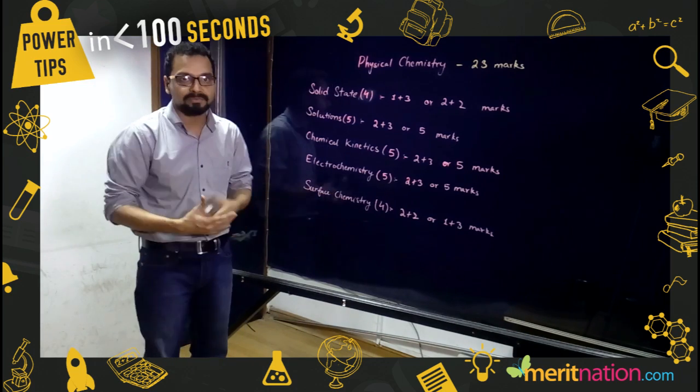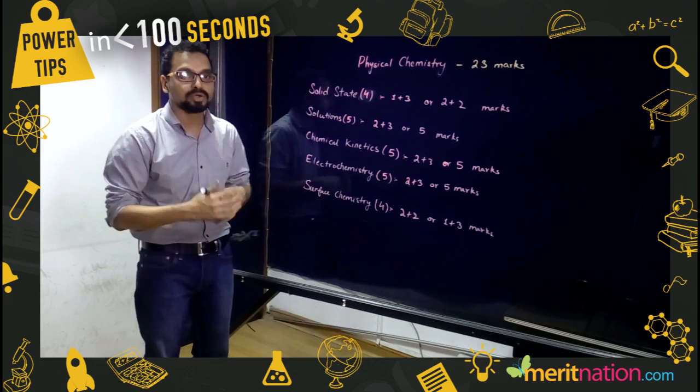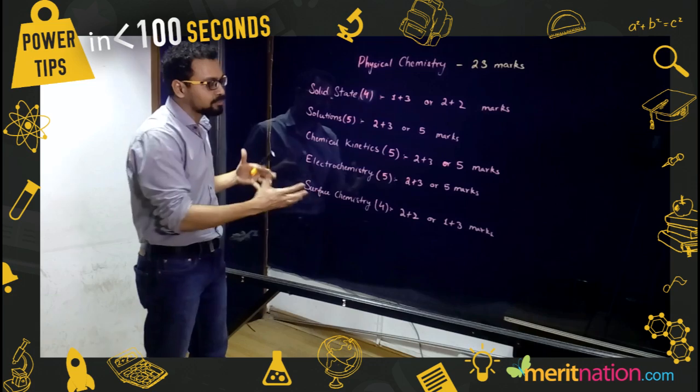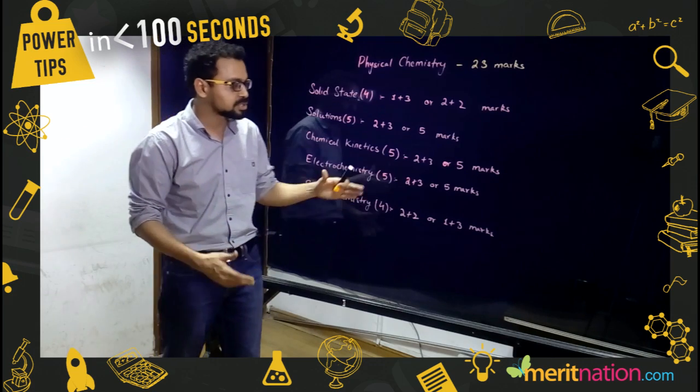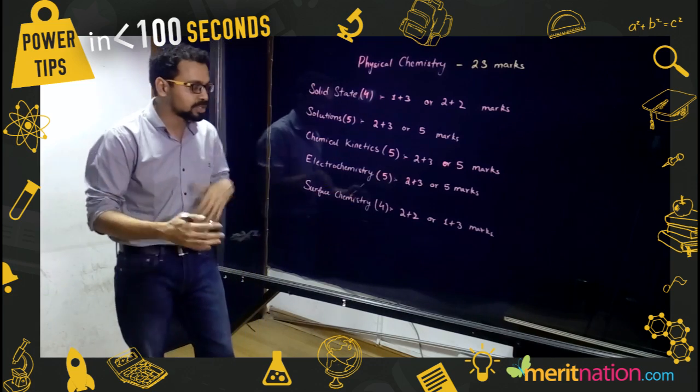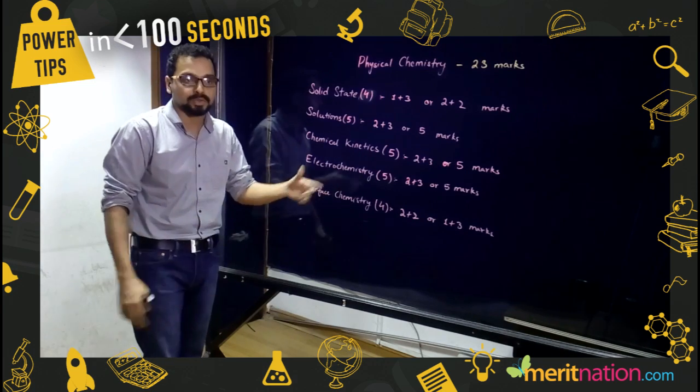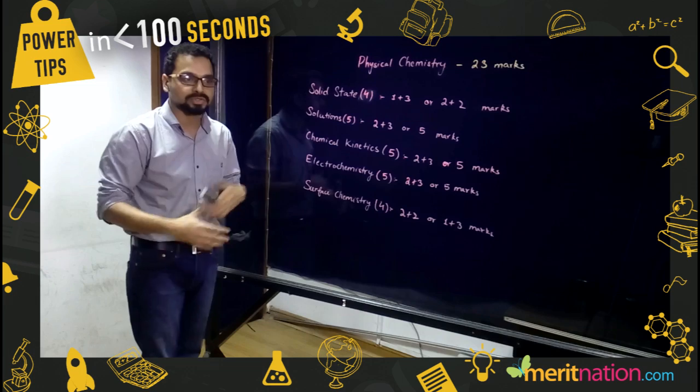Electrochemistry - this is one topic that students get a little bit confused in understanding the notations of the cathode and anode. But if you practice a little bit, you will get a hang of the whole chapter. The questions are fairly direct and formula based, so just focus on the Nernst equation and your Kohlrausch law.